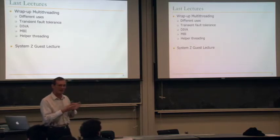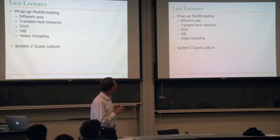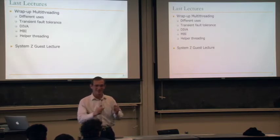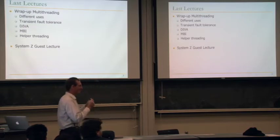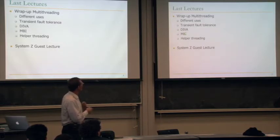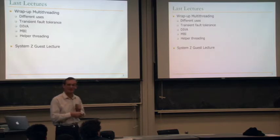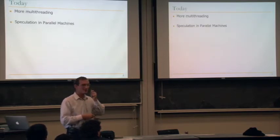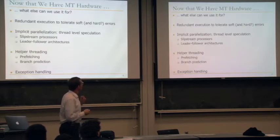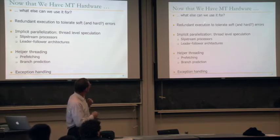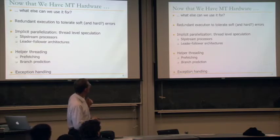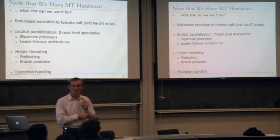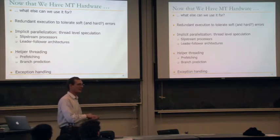We discussed different uses of multi-threading: transient fault tolerance, and DIVA can be considered a kind of multi-threading if you stretch your mind a little bit — you have a different thread at the end doing the checking. We covered microarchitecture-based introspection very quickly and we talked about helper threading. Today we'll do a little bit more multi-threading and talk about speculation, specifically how you can use multi-threading hardware for implicit parallelization.